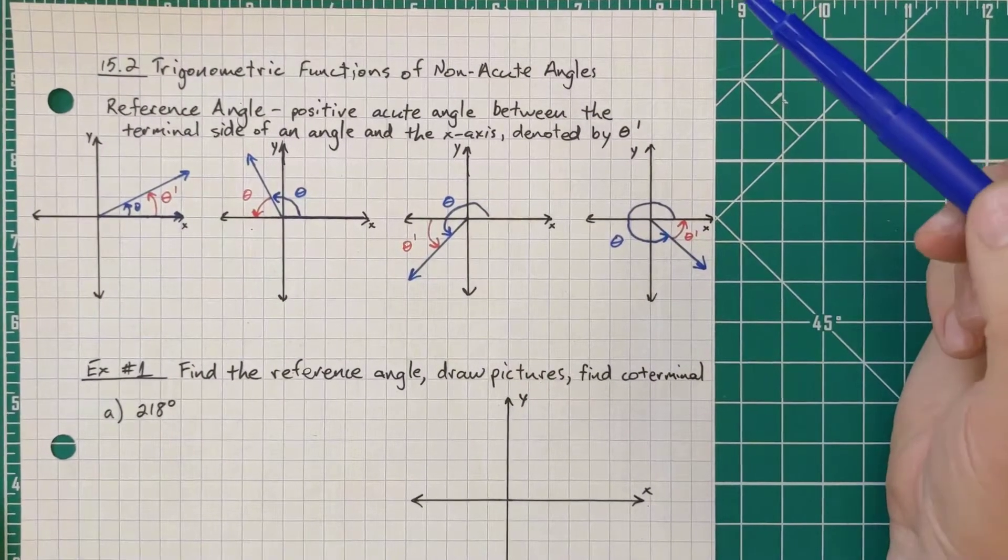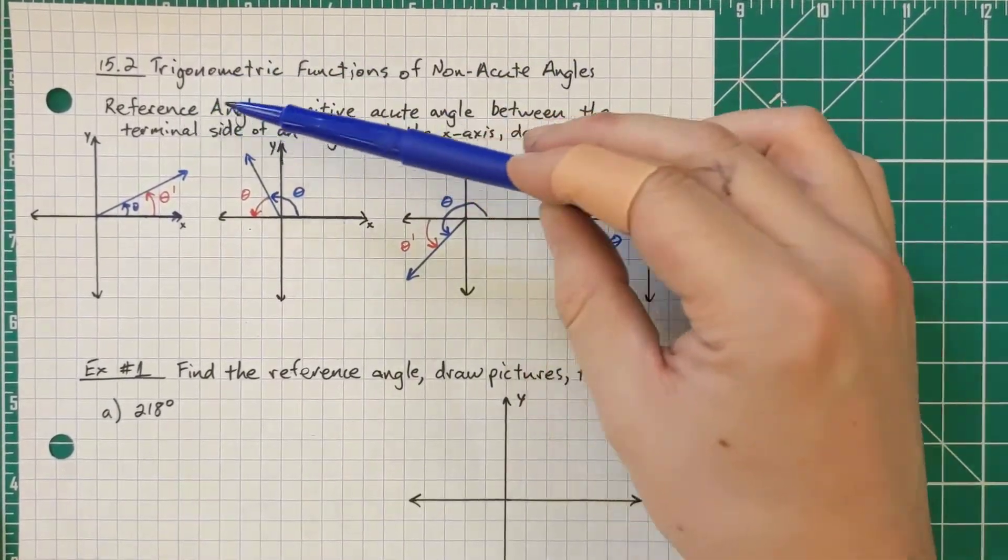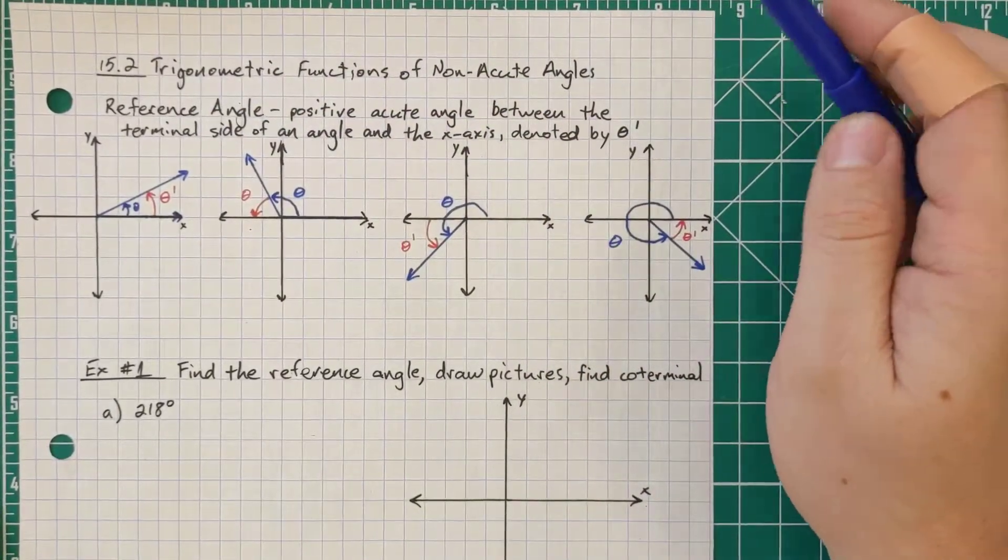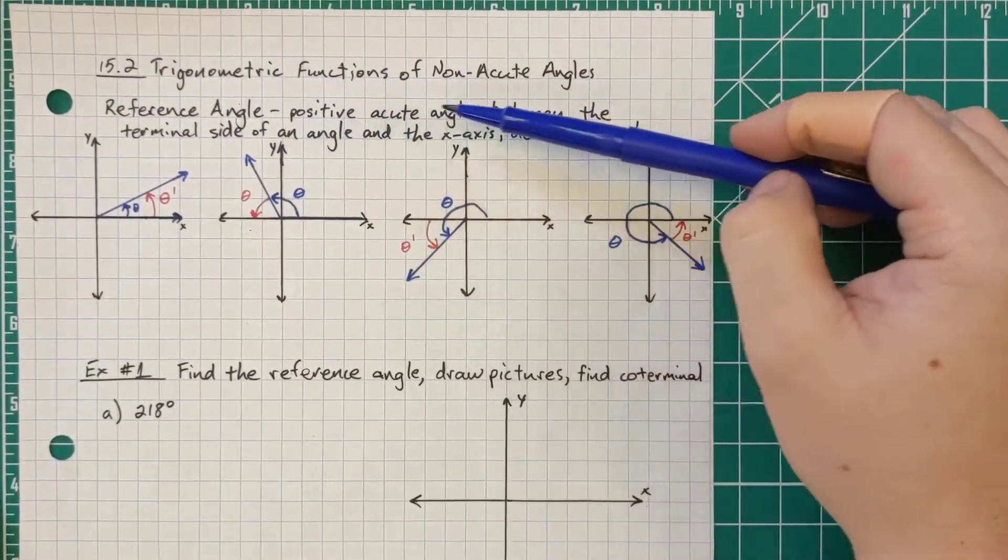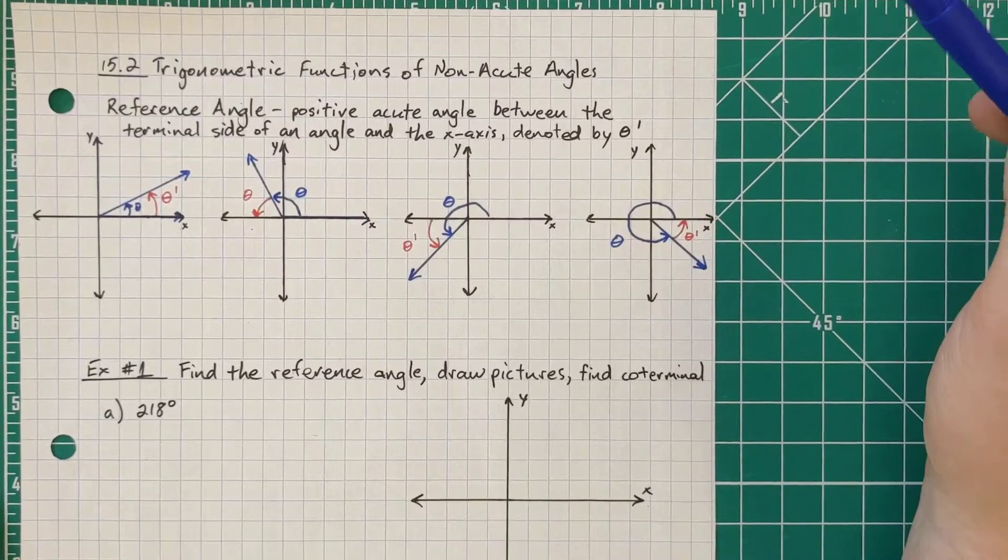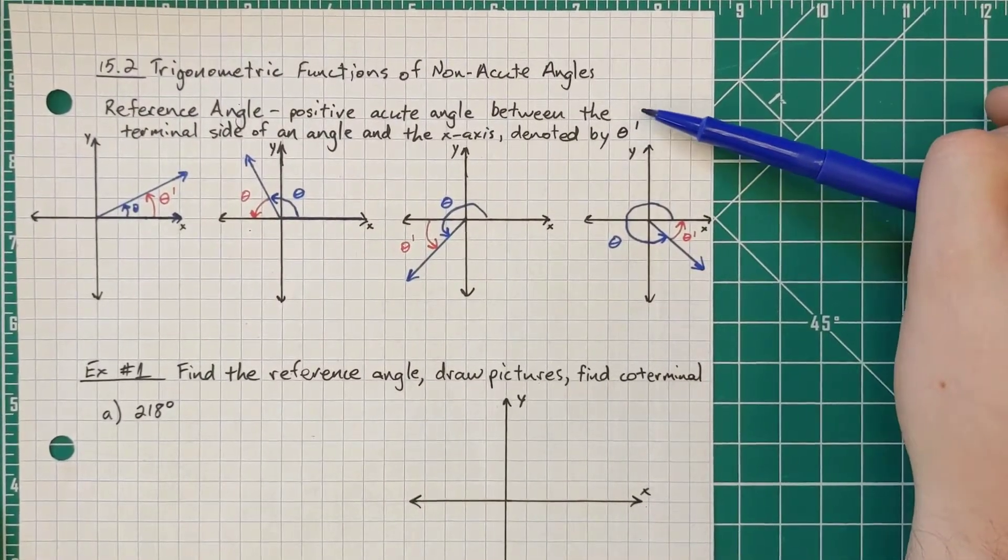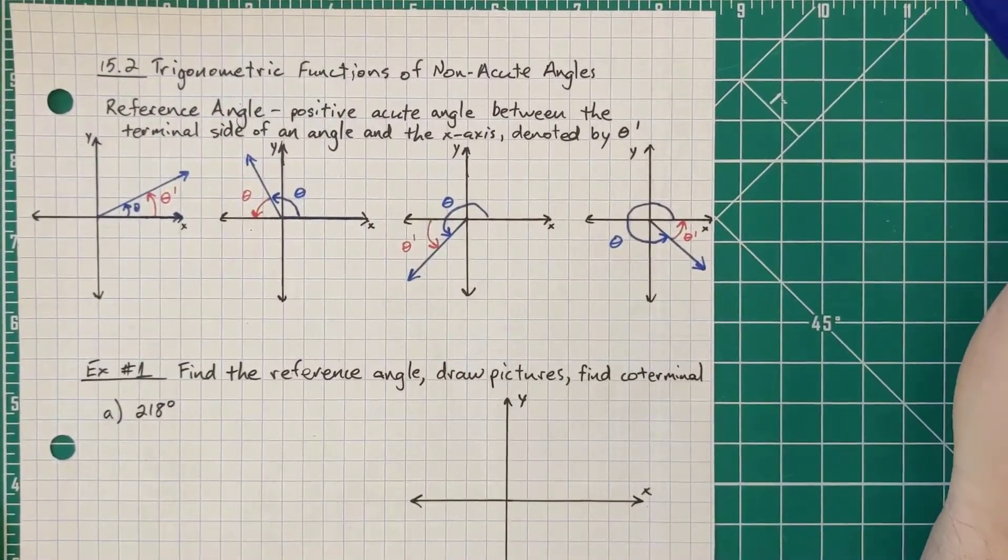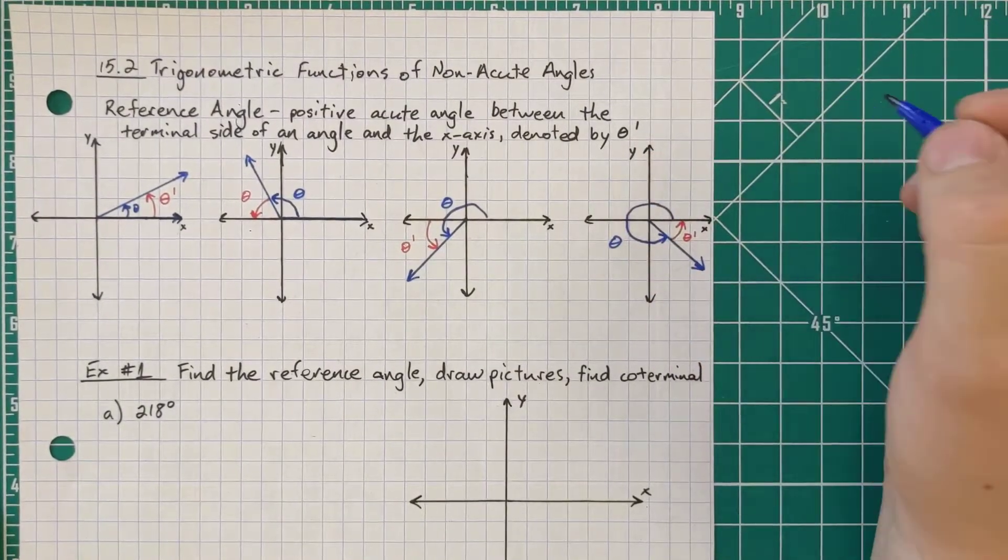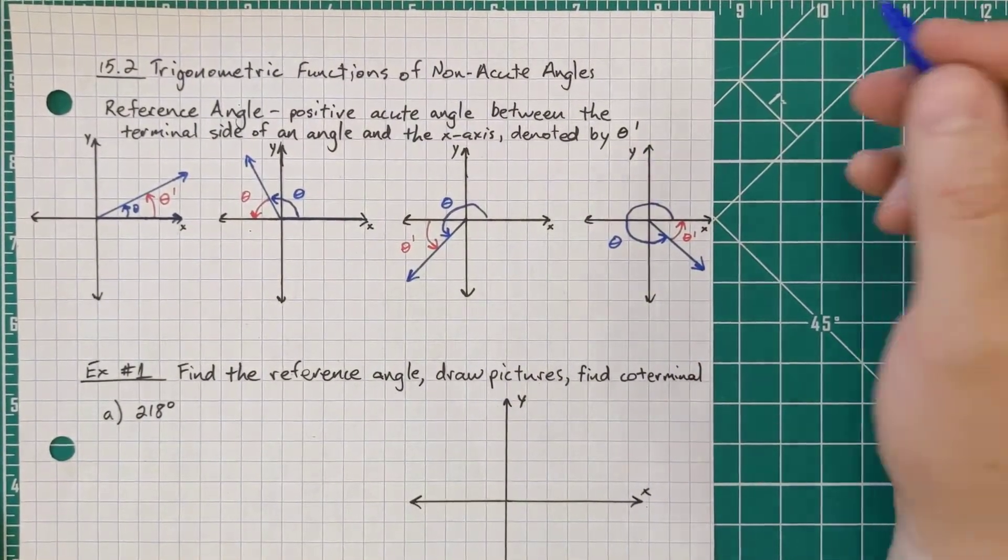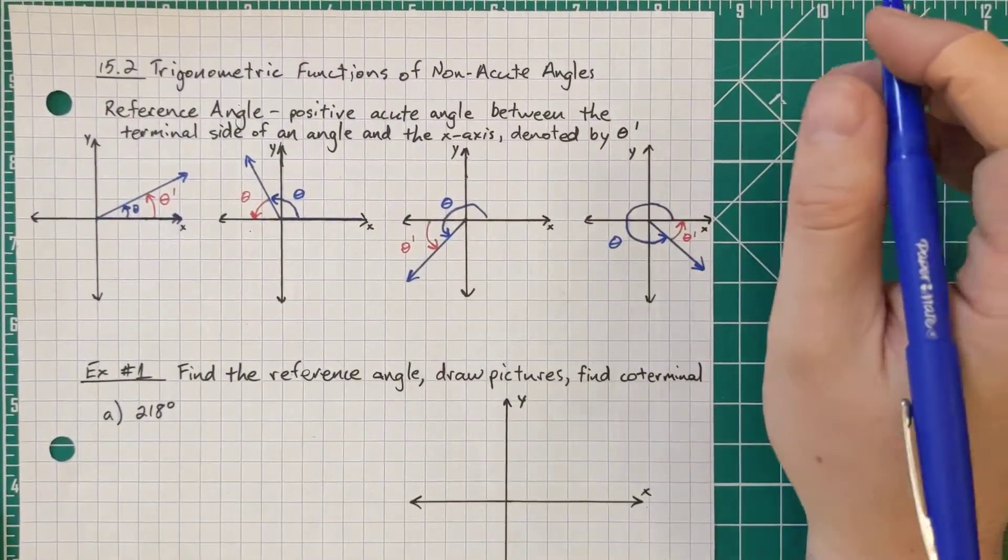So one thing that we need to use are reference angles. Reference angles are very helpful. It is a positive acute angle between the terminal side of an angle and the x-axis, denoted by theta prime. So whenever we see that little apostrophe, it really usually will just say prime.